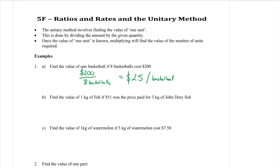Let's try it again, part B. Find the value of one kilogram of fish if $51 was the price for three kilograms of John Dory fish. So we want to find the cost, which was $51 per kilogram, and I had three kilograms. If we divide those numbers, 51 divided by 3 is $17 per kilogram. So it costs $17 for one kilogram, which is what the question was asking me for.